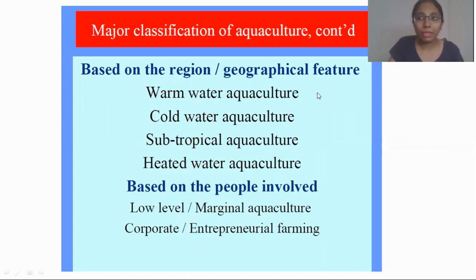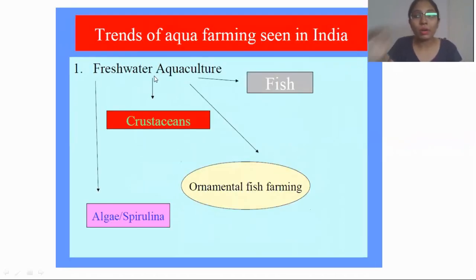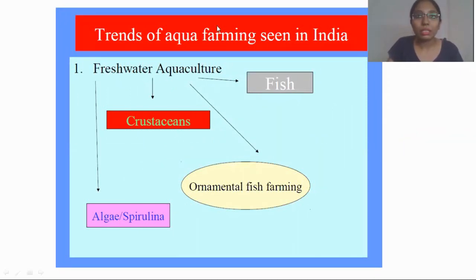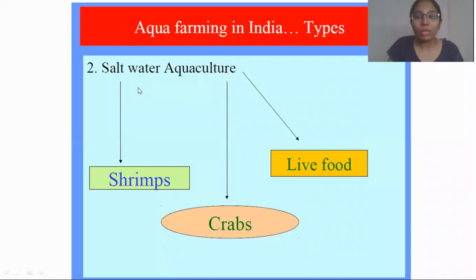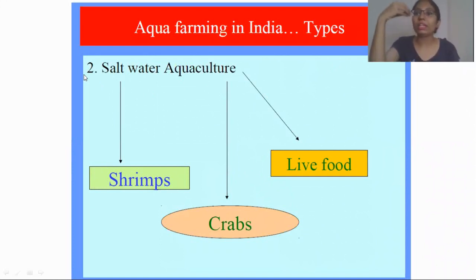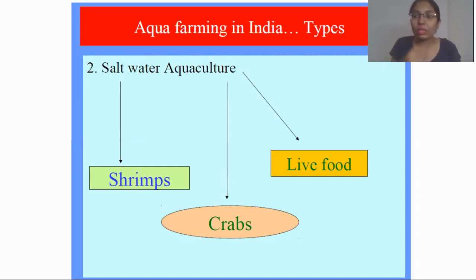Now, let's look at what organisms can be cultured in fresh water. It can be simple fish, crustaceans, ornamental fish, and filialing. For saltwater aquaculture, you can culture shrimps, crabs, and live food. On the shore, people tend to eat fish as soon as they are collected — they pan fry it right there and eat it.